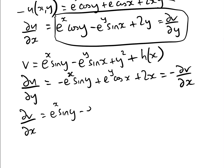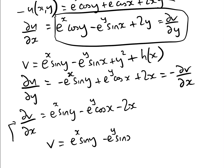Now we integrate dv/dx with respect to x, giving v equals e to the x sin y minus e to the y sin x minus x squared plus some function of y plus a constant of integration. We could put the constant on either expression — it doesn't make any difference.